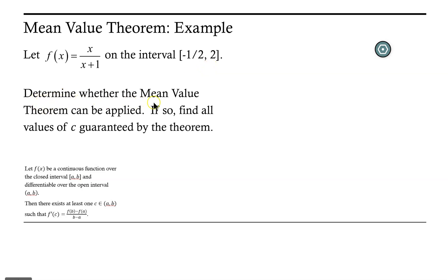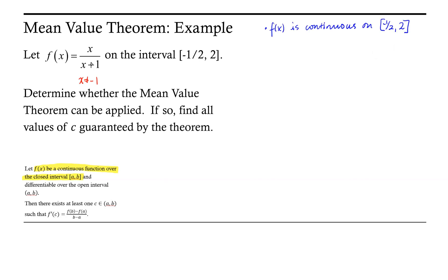First we need to determine whether the mean value theorem can be applied, and if so, find all values c that are guaranteed by the theorem. Recall that by the mean value theorem, f of x must be continuous over the closed interval from a to b — in this case, negative one-half to 2. Our function is a rational function, and rational functions are continuous on their domain. The domain of this function is all real numbers with the exception of negative 1, as that would cause the denominator to equal 0. So f of x is continuous on the interval from negative one-half to 2.